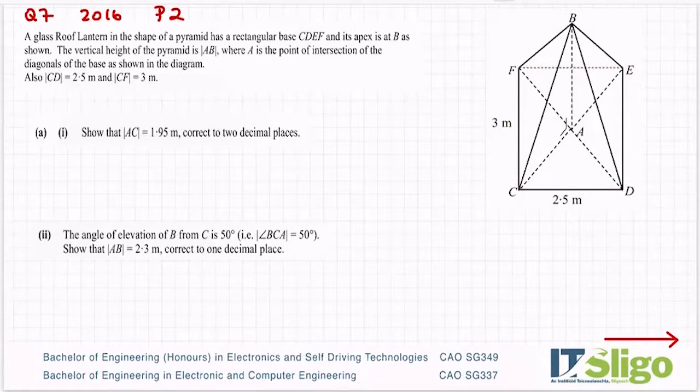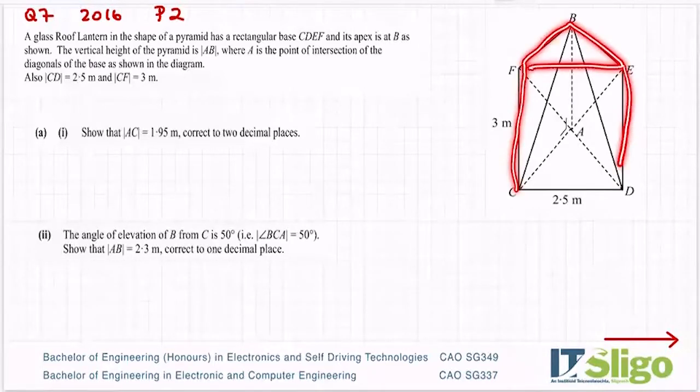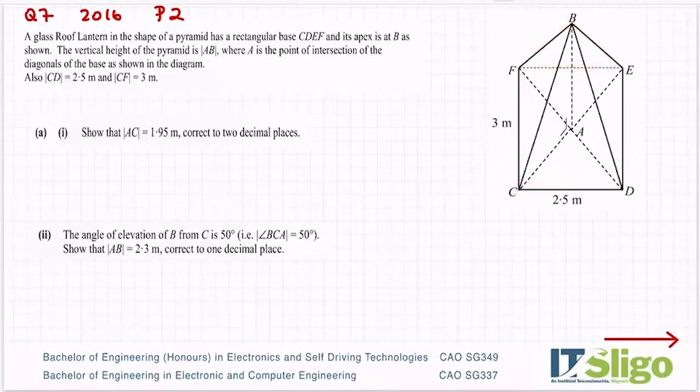Make sure you see it as a 3D shape coming up out of the table at you, where B is that pointy piece at the top. The vertical height of the pyramid is AB, so that is a perpendicular line which drops straight down from B, which is that apex at the top, right down to the table. A is the point of intersection of the diagonals of the base as shown in the diagram.